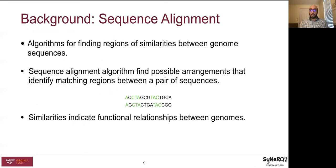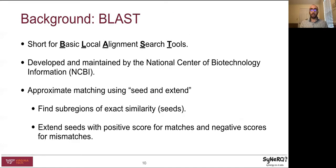Sequence alignment algorithms are algorithms for finding similarity between genome sequences. A sequence alignment algorithm attempts to find regions of similarity by finding possible alignments of two genome sequences that result in the maximum matching of characters. A character in a genome sequence is called a base pair. Similarity between two genome sequences indicates a functional relationship between genomes, such as the relationship between COVID-19 and the SARS coronavirus.